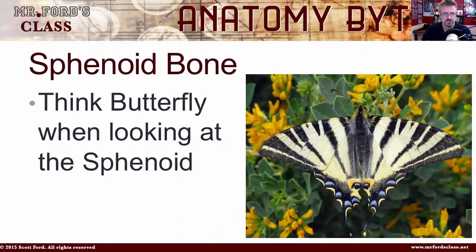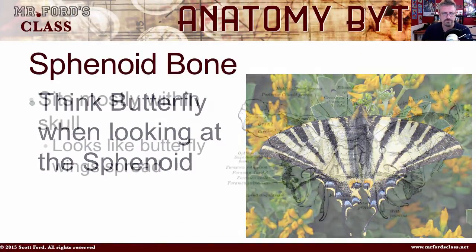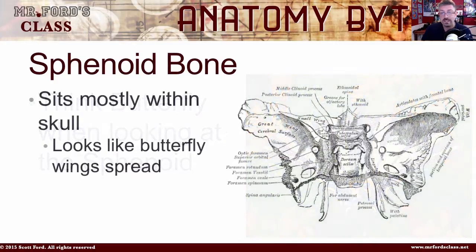Hey, welcome back. In this episode, I want to talk about one of the bones that causes the most confusion — at least I've seen in students — when they're studying the skull, and that is the sphenoid bone. But before we talk about the sphenoid bone, I want you to think of a pretty butterfly. And as you can see from the graphic, we're going to slowly morph this butterfly into the sphenoid bone. I guess if you look at it kind of cross-eyed and a little out of focus, it looks a little bit like a butterfly. But that's what I want you to think about when we're looking at the sphenoid bone.